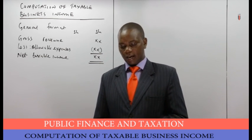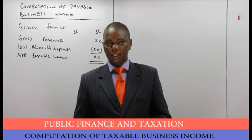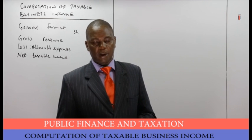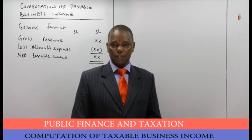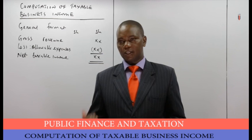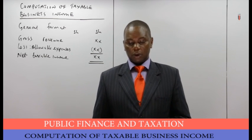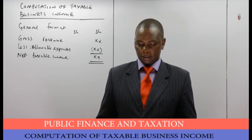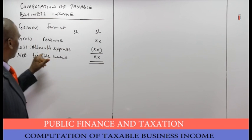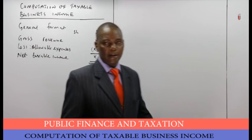The fifth item is capital allowances, which we have discussed in earlier sessions. These include investment deduction, industrial building allowance, wear and tear allowance, and diminution in value. Capital allowances are generally allowable and will be included under allowable expenses as they reduce the taxable income.